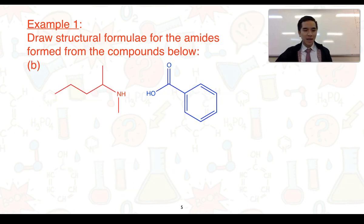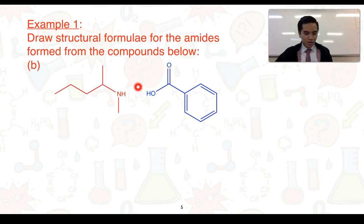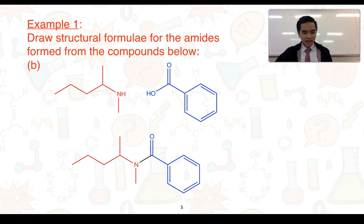For part B, we've got the skeletal formula of some different molecules. To the left, we've got our amine, and to the right, we've got our carboxylic acid. I've aligned them so that we get the elimination of water from this point. We then get this carbon bonded to the oxygen going to bond to the nitrogen, and therefore it will result in this amide being formed.